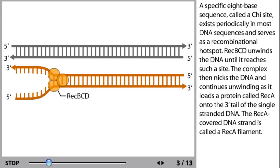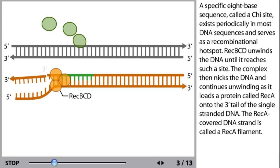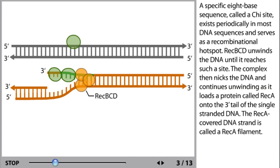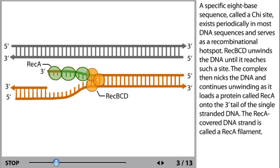A specific eight-base sequence called a CHI site exists periodically in most DNA sequences and serves as a recombinational hotspot. RecBCD unwinds the DNA until it reaches such a site. The complex then nicks the DNA and continues unwinding as it loads a protein called RecA onto the three-prime tail of the single-stranded DNA.